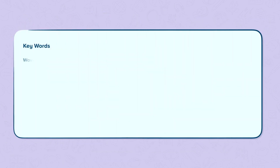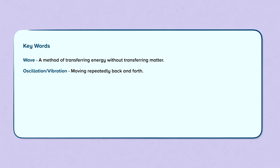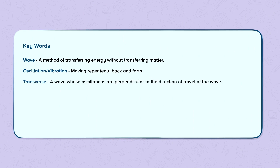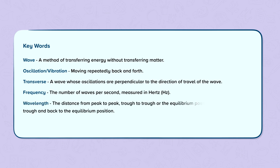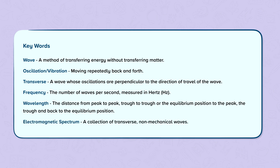Keywords: Wave — a method of transmitting energy without transferring matter. Oscillations or vibrations — moving repeatedly back and forth. Transverse — a wave whose oscillations are perpendicular to the direction of travel of the wave. Frequency — the number of waves per second, measured in hertz. Wavelength — the distance from peak to peak, trough to trough, or from the equilibrium position to the peak, the trough, and back to the equilibrium position again. And the electromagnetic spectrum — a collection of transverse, non-mechanical waves.